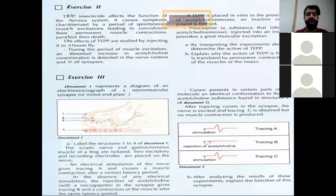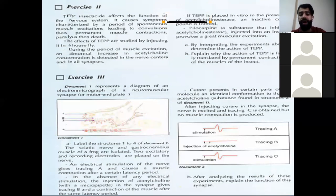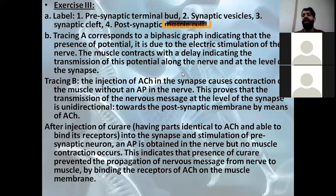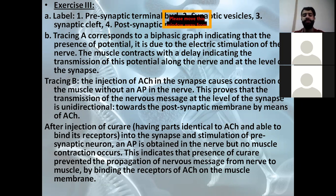We move to exercise D3, talking about the neuromuscular synapse and the motor end plate, discussing the injection of acetylcholine and curare. Acetylcholine and curare are antagonistic — they have opposite functions. Acetylcholine and curare have highly similar spatial configuration, very similar in structure and shape. That's why curare can bind to acetylcholine receptors, blocking the binding of acetylcholine to its receptor.